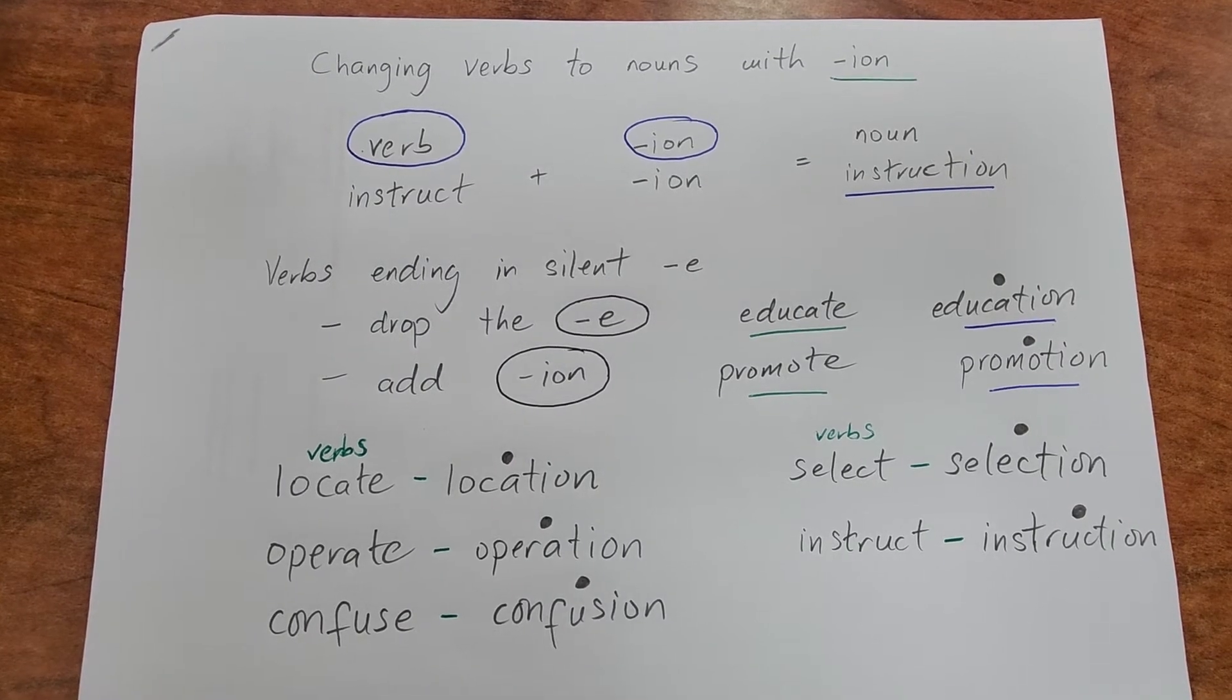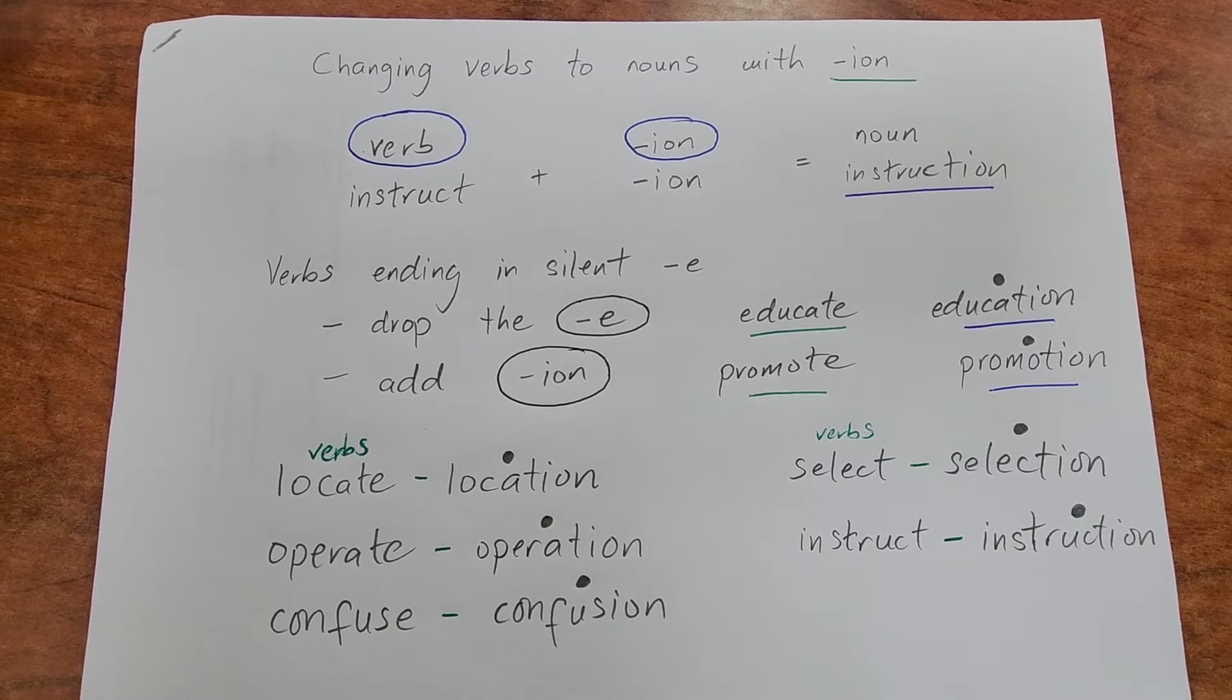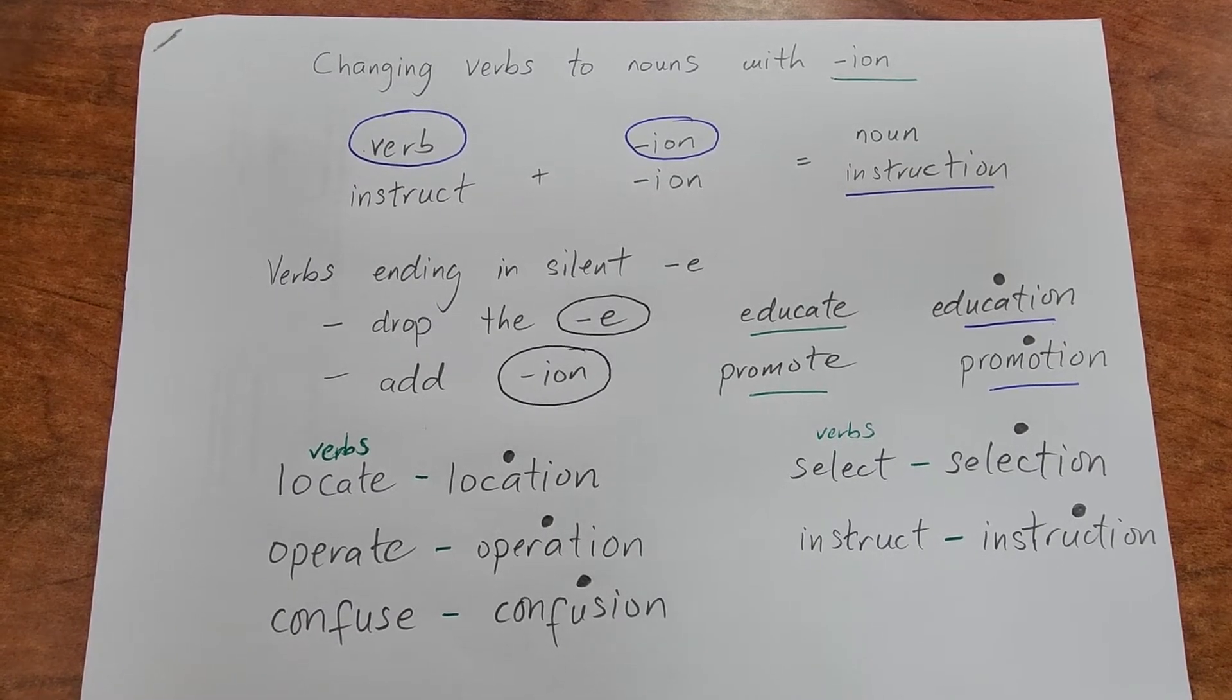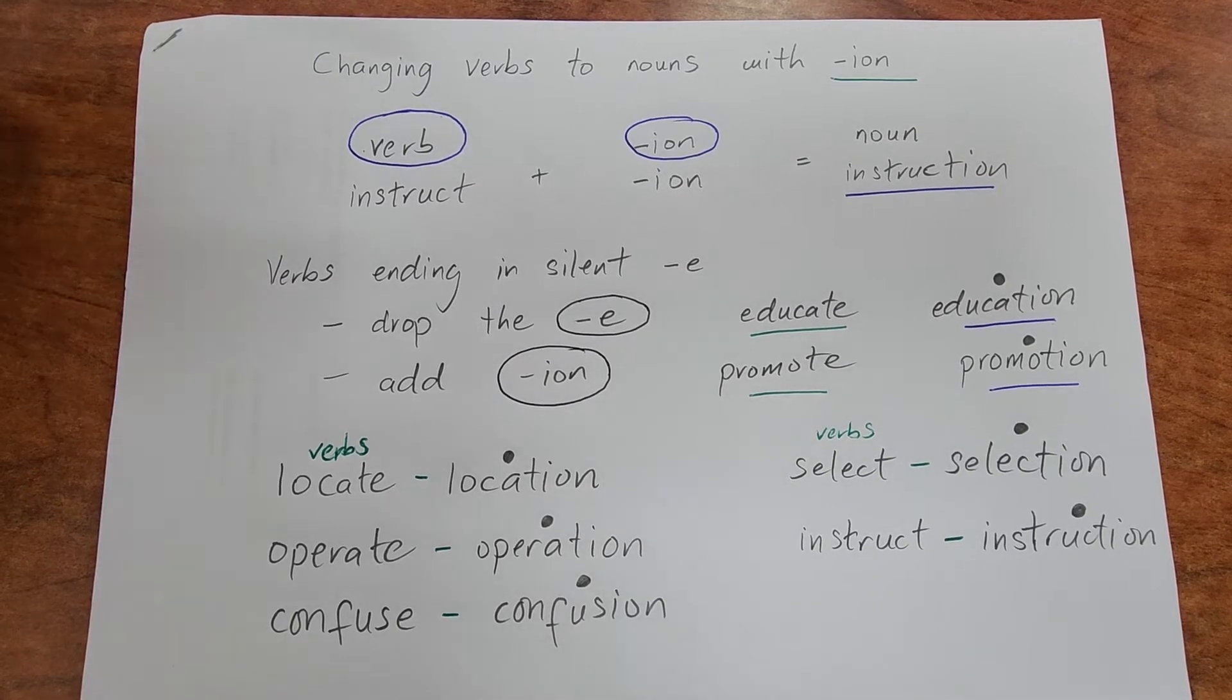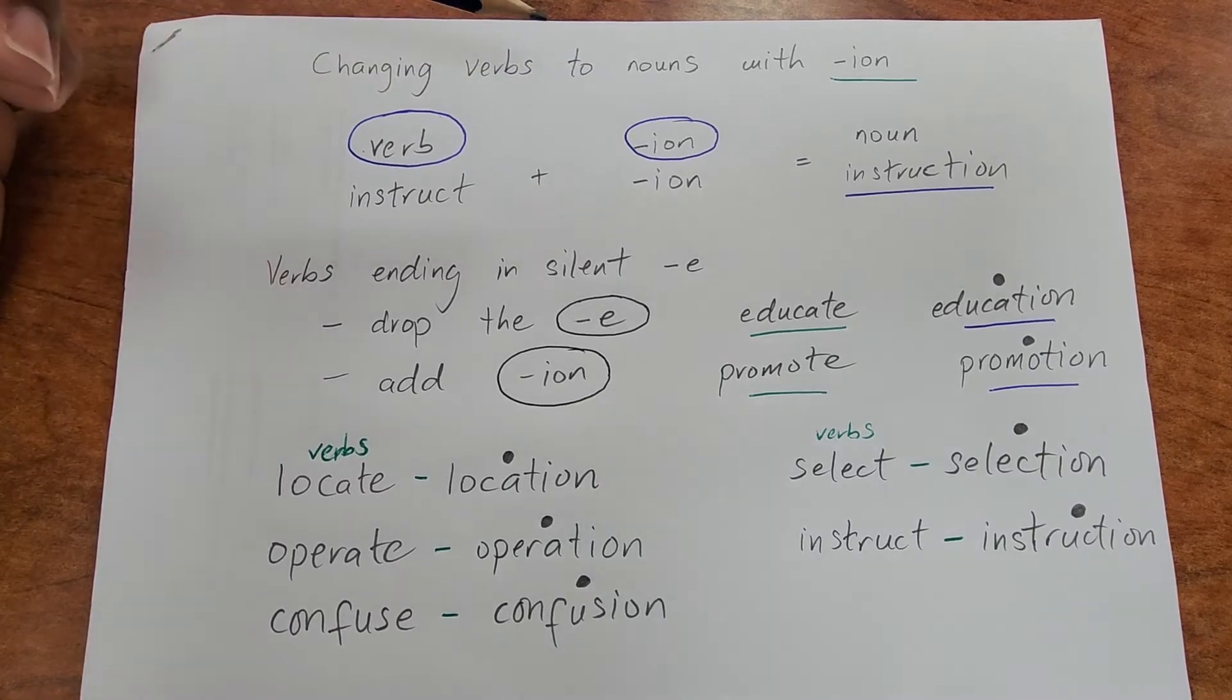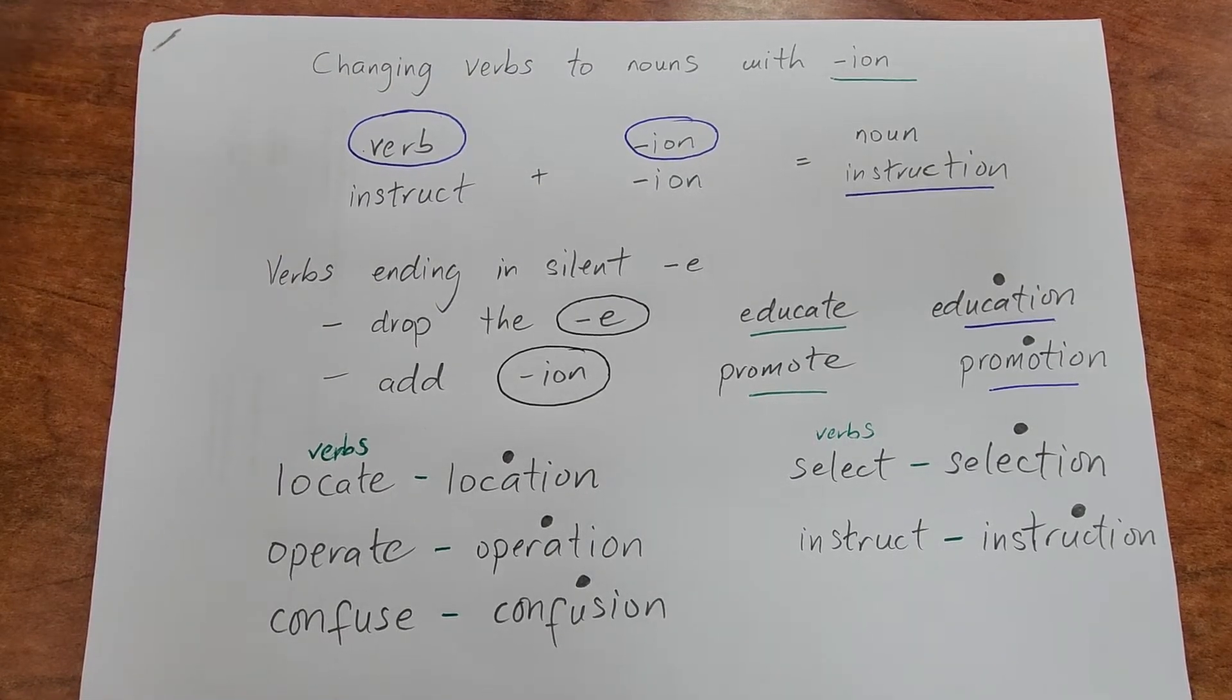Hi, welcome back to my channel. In this video, we're going to look at changing a verb to form nouns. In this situation, we'll be adding the ending -ion to the verb to express an act or condition or the result of something.